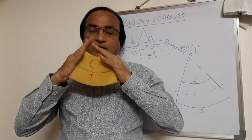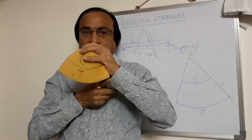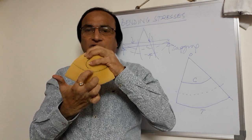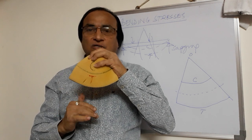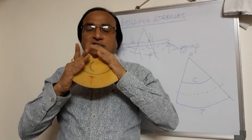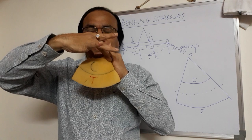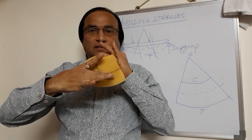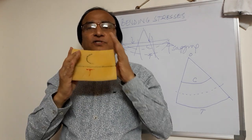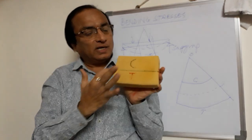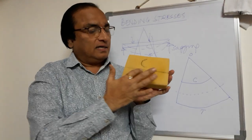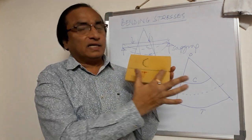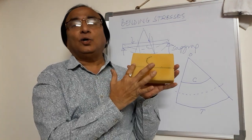If you see the bent form, tension is maximum at the bottom and stretching is maximum there. As we move towards the center, the stretching goes on decreasing. Similarly, the compression is maximum at the top; if I move towards the middle, the compression is going on decreasing. There is one layer here where neither there is tension nor there is compression.